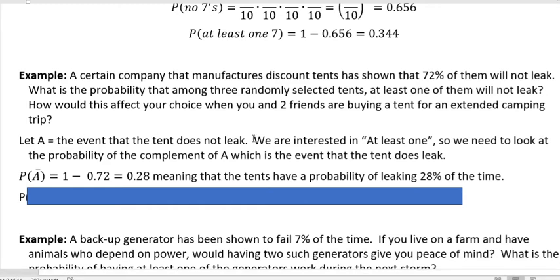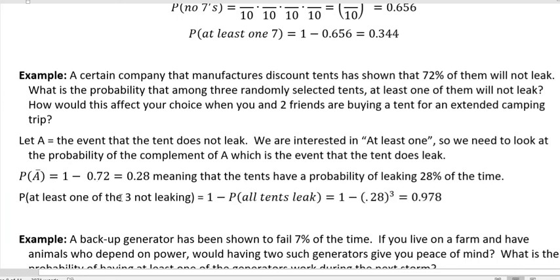If A is the event that the tent does not leak, and we are interested in at least one, so we need to look at the probability of the complement of A, which is the event that the tent does leak. If the tent does not leak 72 percent of the time, which they told us, that means that the tents do leak 28 percent of the time, or 0.28. So that's the probability that we're going to work with. The probability that at least one of the three tents will not leak is one minus the probability that all tents do leak. Because there's going to be one case where they all leak, and then every other case is going to have at least one that doesn't. We're going to get three tents, that's where the third power comes to. We have 0.28 to the third power, and we subtract that value from one.